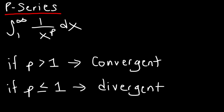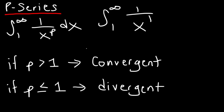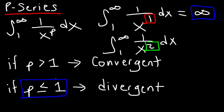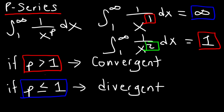We saw that in both examples. In the first example with 1 over x, p was equal to 1, and it was divergent because the answer was infinity. In the second example with 1 over x squared, p was equal to 2, and we got 1 as our answer — confirming that if p is greater than 1 the series converges, but if p is less than or equal to 1 it diverges.